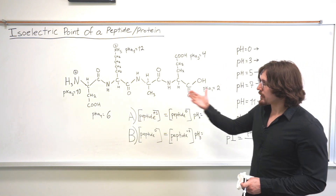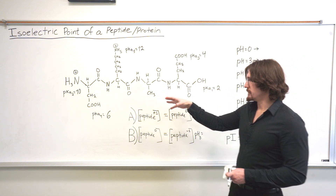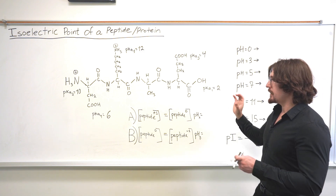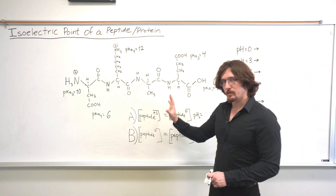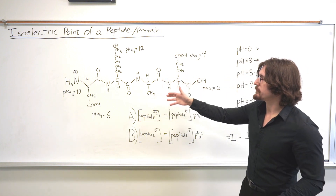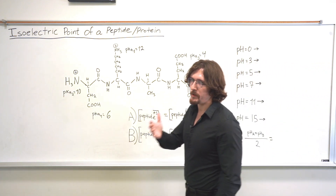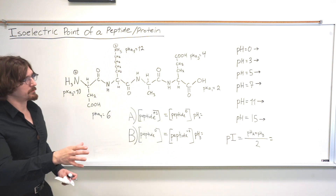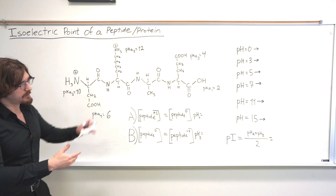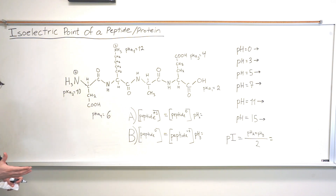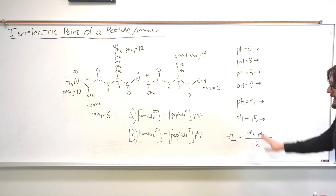Our goal here is to figure out at which pH the zwitterion form — or the neutral form — of this molecule is predominant. That's going to be the isoelectric point. The way to approach problems like this is to pretend that the initial pH of our hypothetical titration is zero, determine the net charge at that pH, and then increase the pH to different points to see what the net charge is — identifying when we have positively charged forms, negatively charged forms, and the neutral form.